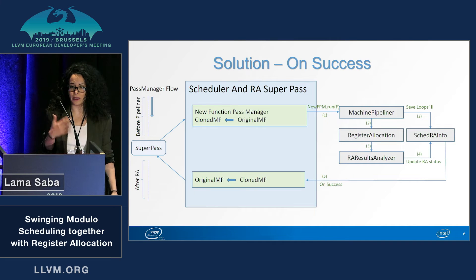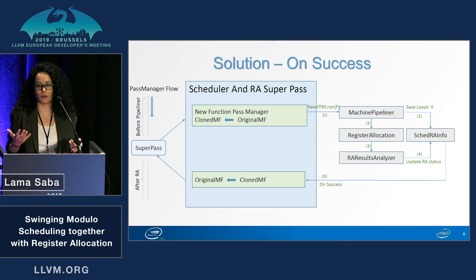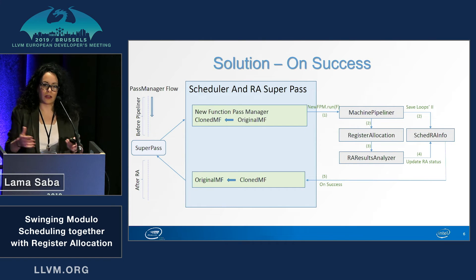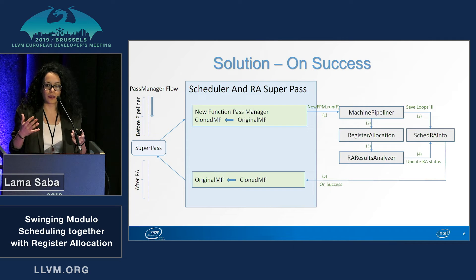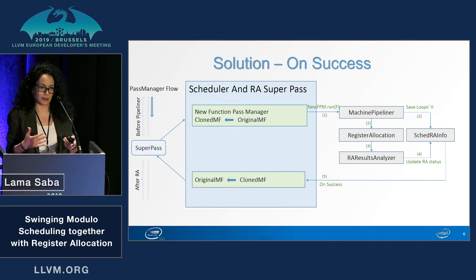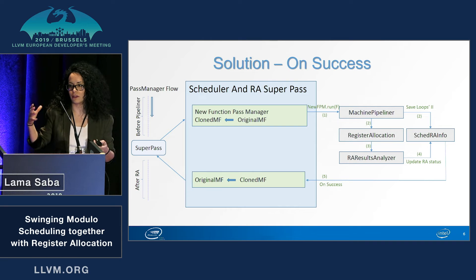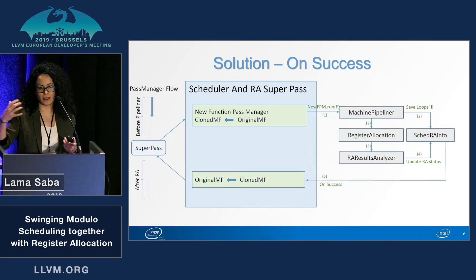So, how do we actually go back and retry? LLVM doesn't really support undoing things done in previous passes. We could have a new pass after the RA that tries to undo the changes by recreating the older state before the pipeliner, but it's difficult because there are a lot of changes. So instead, we keep a snapshot of the original code that we want to go back to.